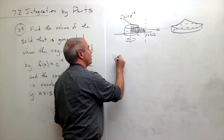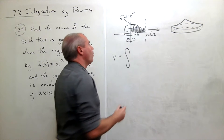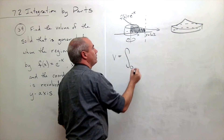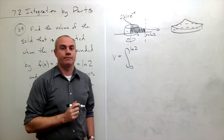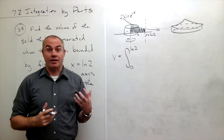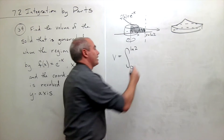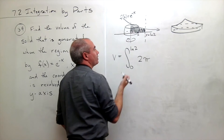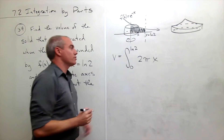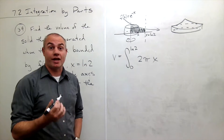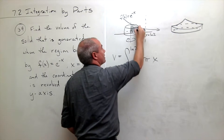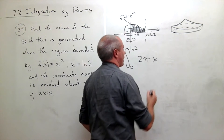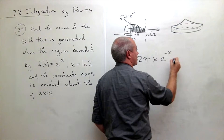The volume is going to equal the integral from a to b. Where do I start and end my slicing? I start at zero and end at ln(2). The formula for shells is 2π·r·h, so I get 2π times the radius at x. The radius is x, and the height of the shell is the functional value f(x), which in this case is e^(-x). So this is e^(-x) dx.